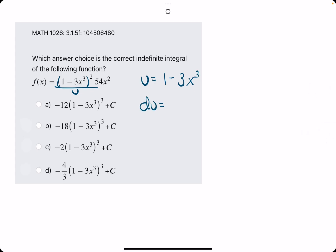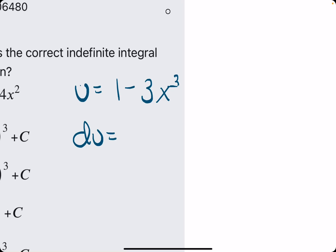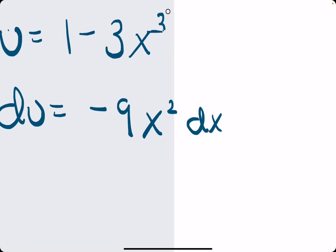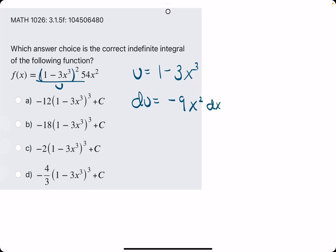The next step is to find du, the derivative of u. So, 1 minus 3x cubed: 1 goes to 0, minus 3x cubed, we bring down the 3, times negative 3 is negative 9, leave the x, and subtract 1 to get x squared. When we find du, always go ahead and tack on dx.